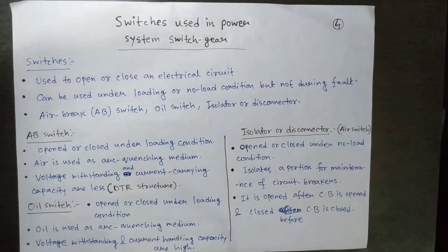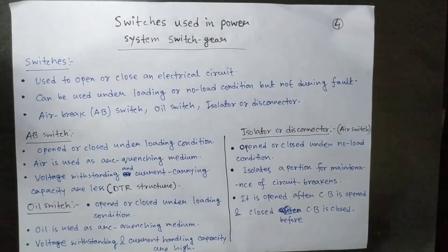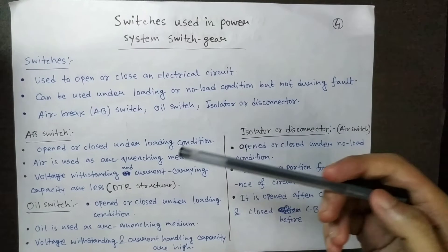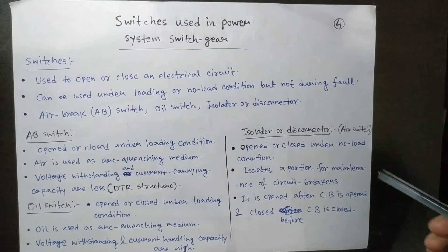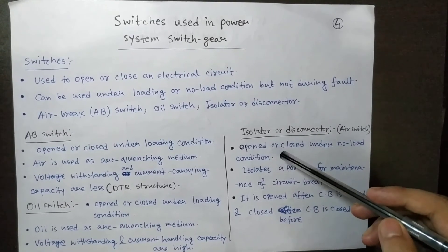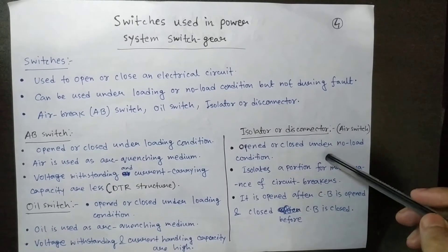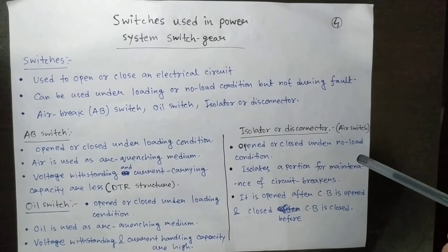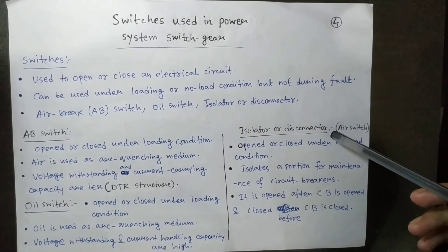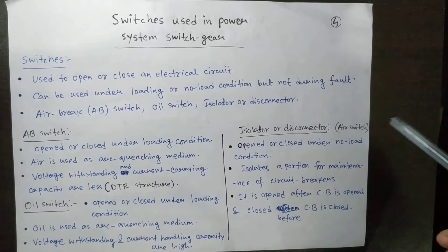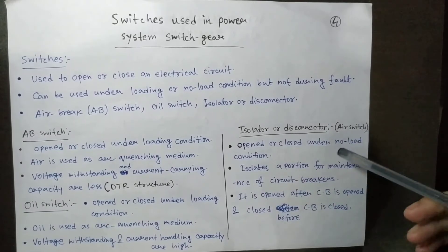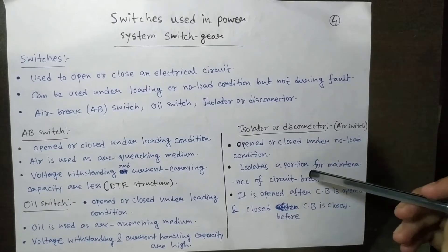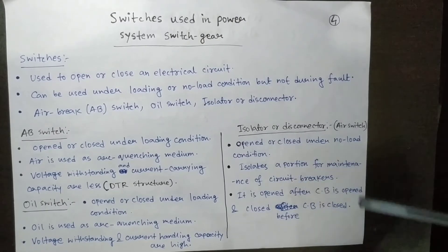Now the isolator, or disconnector, is also a kind of air switch. Sometimes the terms isolator and AV switch are used interchangeably, but there is an important difference: the isolator can only be used during no-load conditions. It can never be used under loading conditions. It is used to isolate a portion of the circuit for the maintenance of circuit breakers.